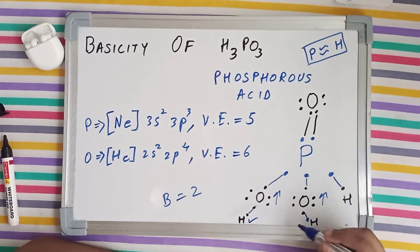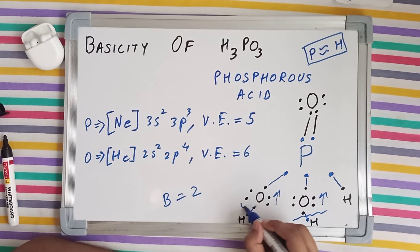But if we place this H3PO3 in water, this bond will break off and similarly this one also. So two H⁺ ions will be released and our basicity will be two.